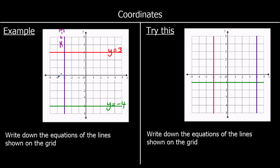Now 3 for you to try — pause the video and have a go at these. The green line is all the points where y equals 1, so it's called y equals 1. The purple line is all the points where x equals 4, called x equals 4. And the red line is all the points where x is negative 2, called x equals negative 2.